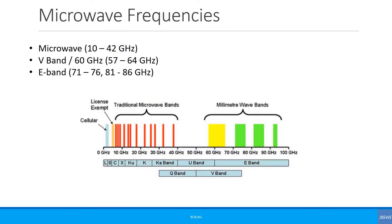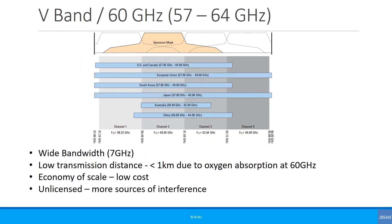Coming back to microwave frequencies, the 10 to 42 GHz band is used extensively for backhaul, as well as the V-band at 57 to 64 GHz and the E-band. The V-band has another challenge: 60 GHz is the ISM band, which is unlicensed and used for WiGig. Not all bands are aligned across geographic areas, but there are common frequencies and frequencies only available in certain regions. The 60 GHz band is available across the globe.